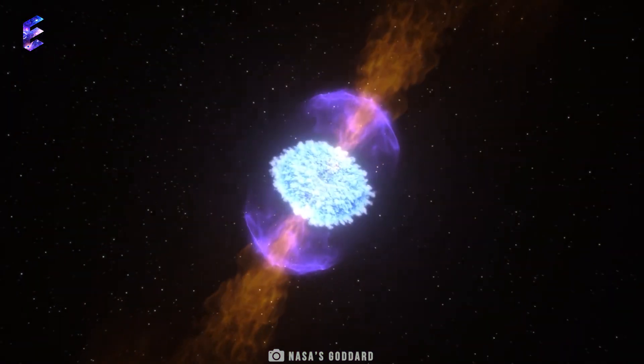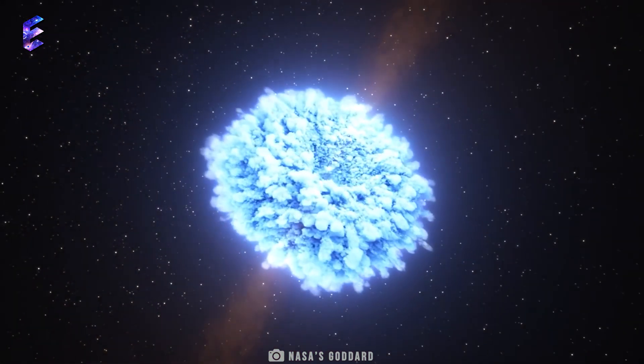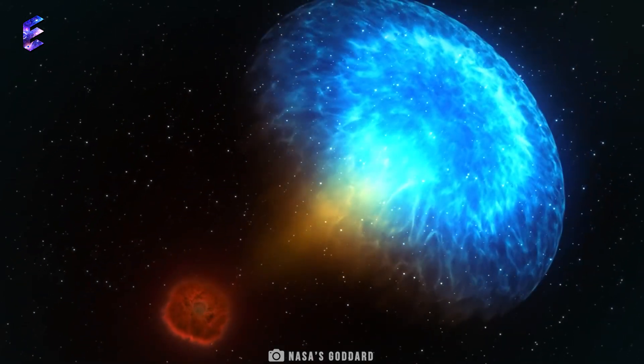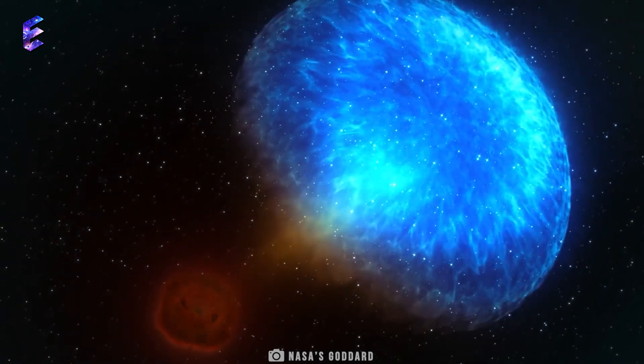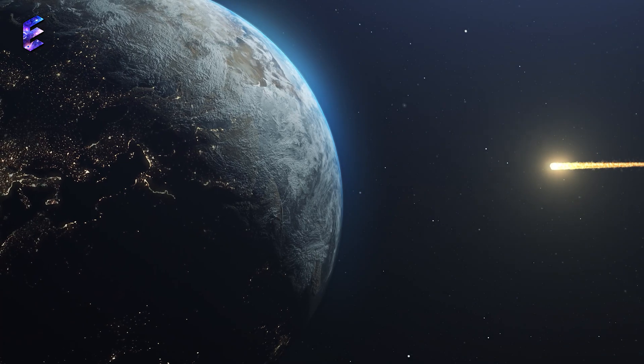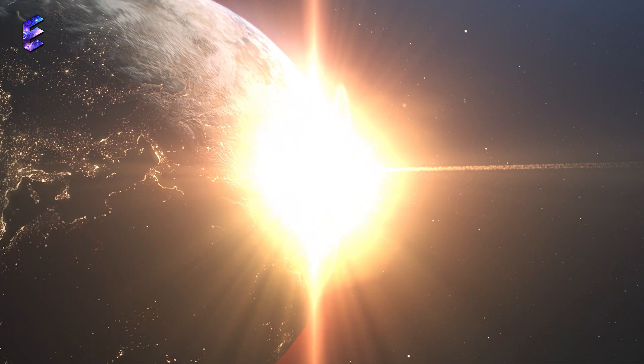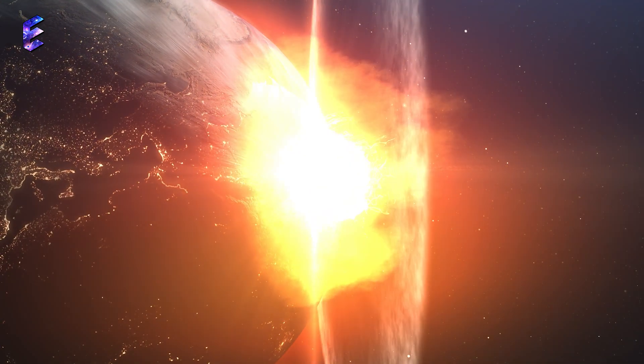Gamma rays are released in a narrow jet along the axis of rotation. All GRBs observed till date have occurred outside the Milky Way, and that is good for us, because it is speculated that if a GRB whose jet was pointed directly towards us were to occur in our galaxy, it could cause a mass extinction event.